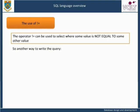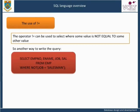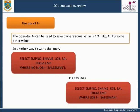Another way to write the query is: SELECT employee number, employee name, job, salary FROM employee WHERE NOT job equals salesman. This is equivalent to: SELECT employee number, employee name, job, salary FROM employee WHERE job not equal to salesman.